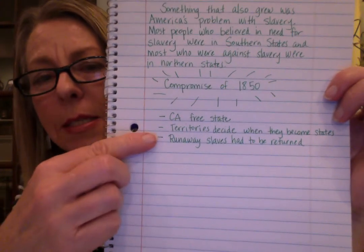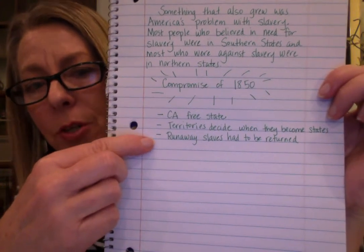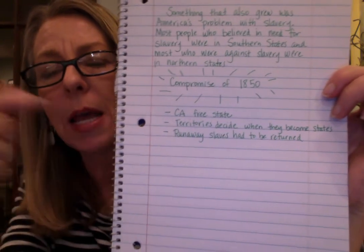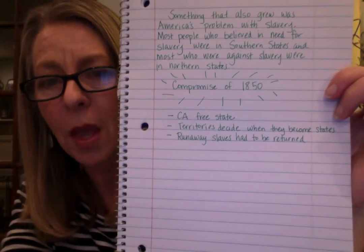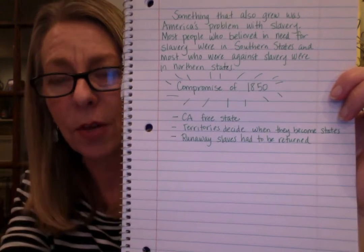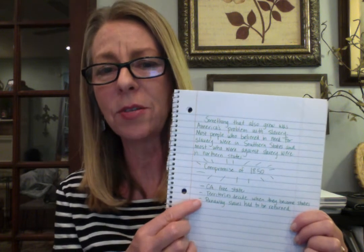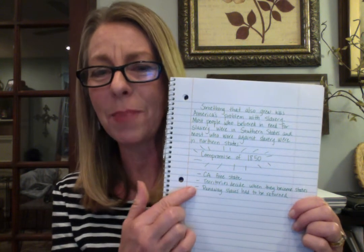But what the slave states did agree with was that runaway slaves had to be returned. A lot of times what would happen is runaway slaves would head to the north because they wanted to get to the free states so that they could be free. The southern states' view was: that's my property — my property took itself to the free states, and therefore the free states should send my property back. The free states did not agree with that, but the southern states thought it was really important. So it became a law that slaves who escaped to the north, if someone caught them, could be returned to the slave owner.